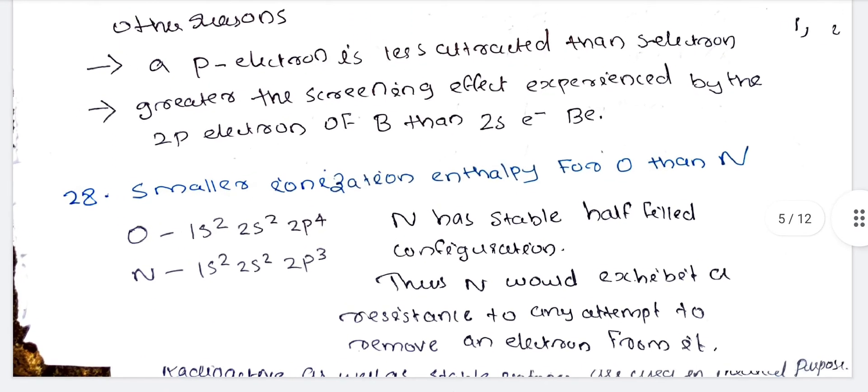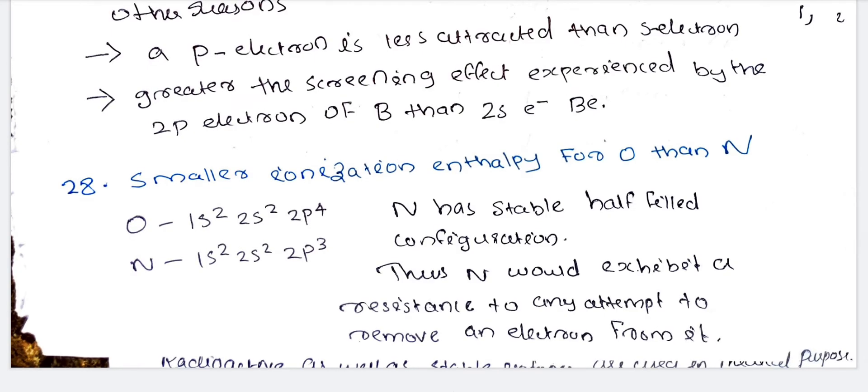The smaller ionization enthalpy of oxygen than nitrogen. Nitrogen has a half-filled configuration which is more stable, so the ionization enthalpy is higher for nitrogen.